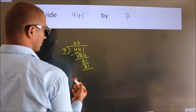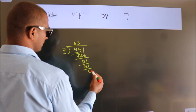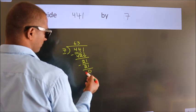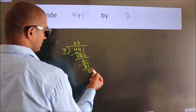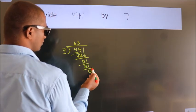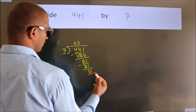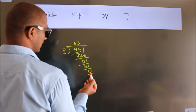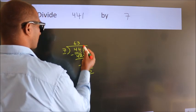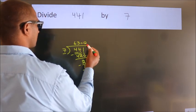Now we subtract. We get 0. After this, there are no more numbers to bring down. We got remainder 0. So this is our quotient.